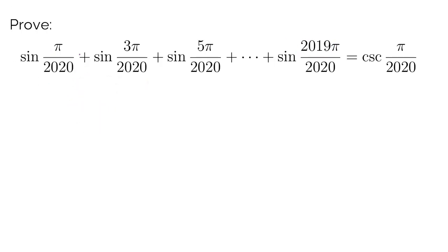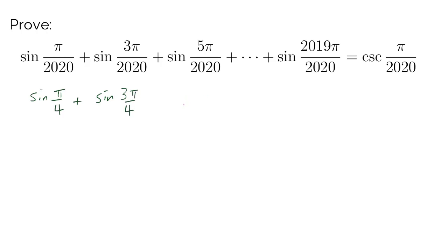This looks like a pretty awesome identity, but how do we go about proving this? One of the things you may conjecture is that if the identity holds true for 2020, it's probably going to hold true for a smaller number, say 4. So to derive some intuition, let's consider sine of pi over 4, sine of 3 pi over 4, and compare that to cosecant of pi over 4.